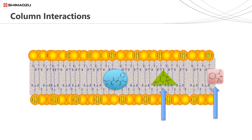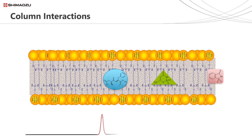This green analyte has had more interaction with the stationary phase, but if flow was allowed to continue, it would elute next. This blue analyte has had the most interaction with the stationary phase, so if flow was allowed to continue, it would elute last — it has the longest retention time. The chromatogram for this separation may look something similar to this: red analyte eluting first with the shortest retention time, then the green analyte, and finally the blue analyte, which has the longest retention time.